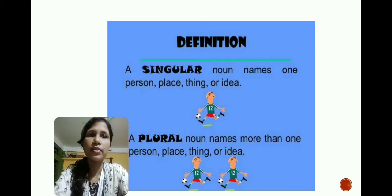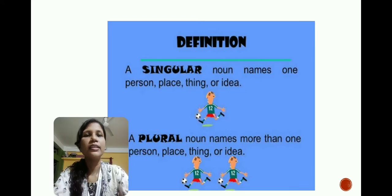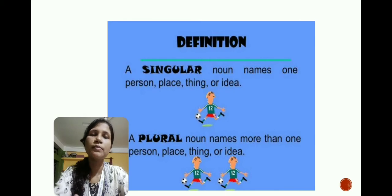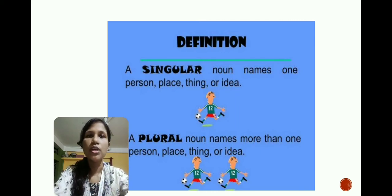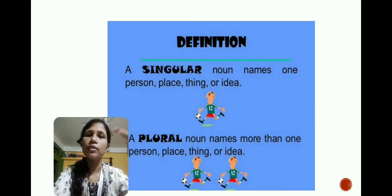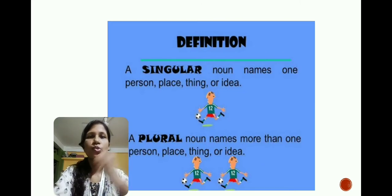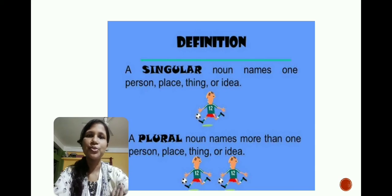In this picture you can see there is only one player in the singular noun — he is playing football. In the plural noun it means more than one person, place, thing, or idea. Here you can see a picture of two players, that means it is more than one. So singular means one and plural means more than one or many. I hope the concept is clear to you.